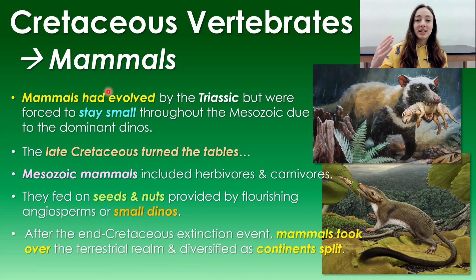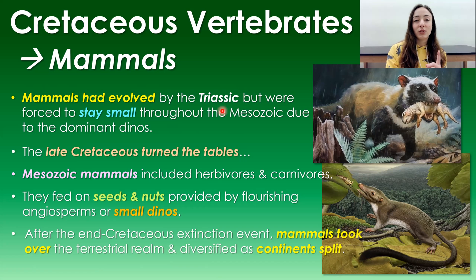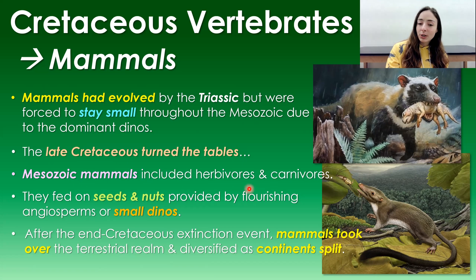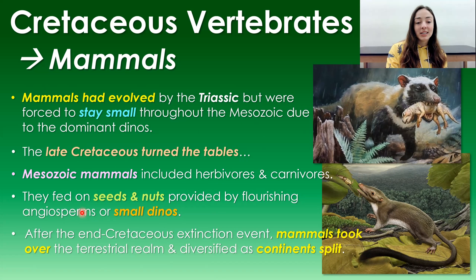Moving on to mammals — mammals didn't wait until the dinosaurs went extinct to evolve; they just had to wait for most dinosaurs to go extinct to dominate. Mammals evolved by the Triassic but were forced to stay small due to the dominant dinosaurs. At the end of the Cretaceous, the tables turned: dinosaurs largely went extinct, and mammals filled those vacated niches throughout the Cenozoic. Mesozoic mammals included both herbivores feeding on angiosperm seeds and nuts, and carnivores feeding on small dinosaurs.